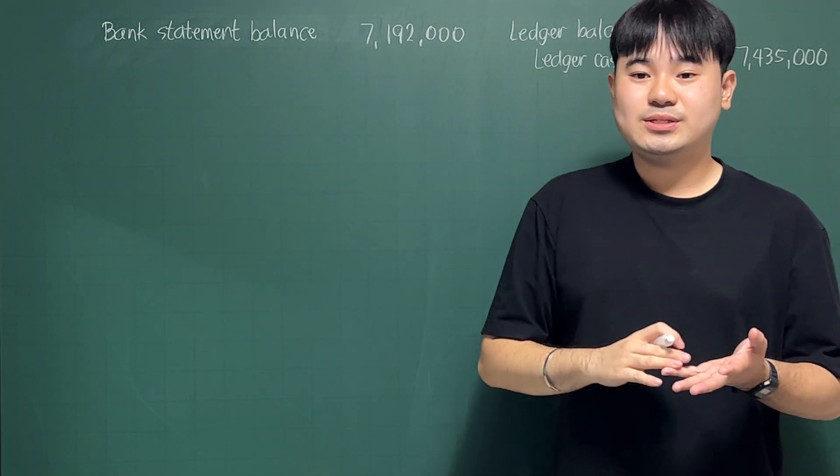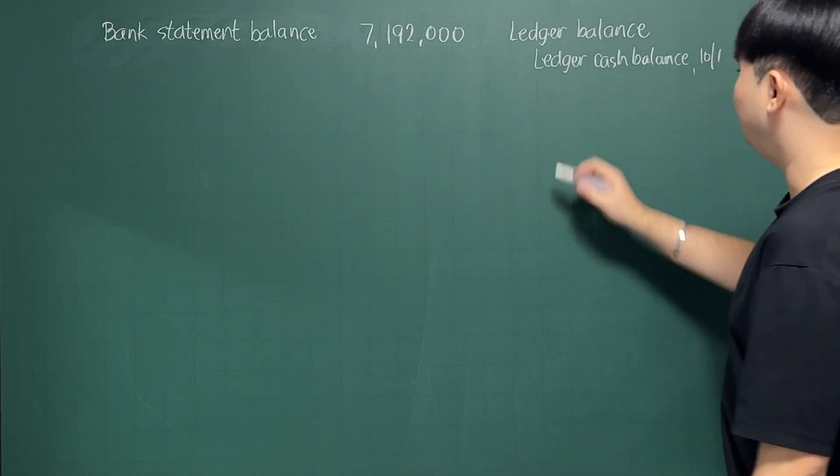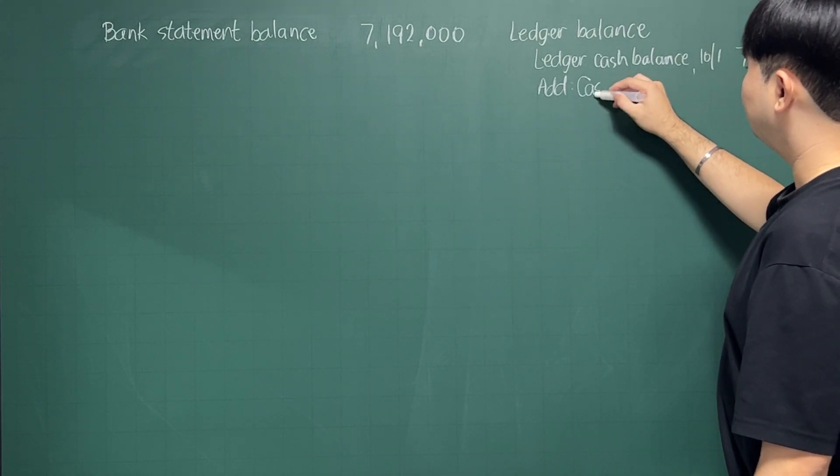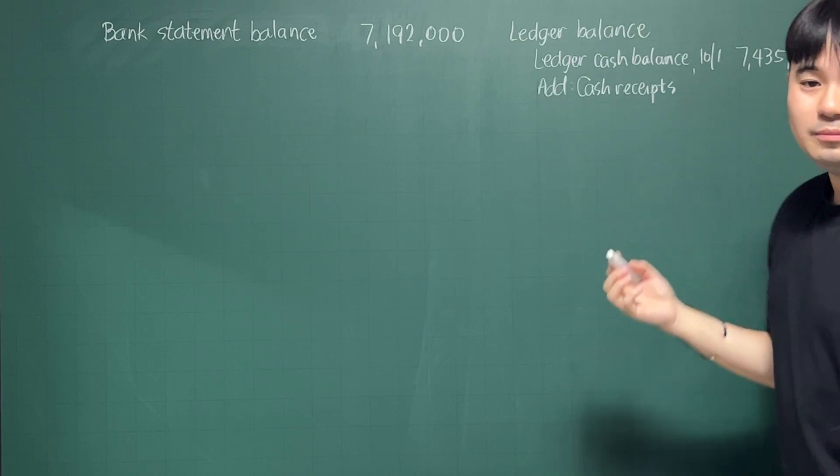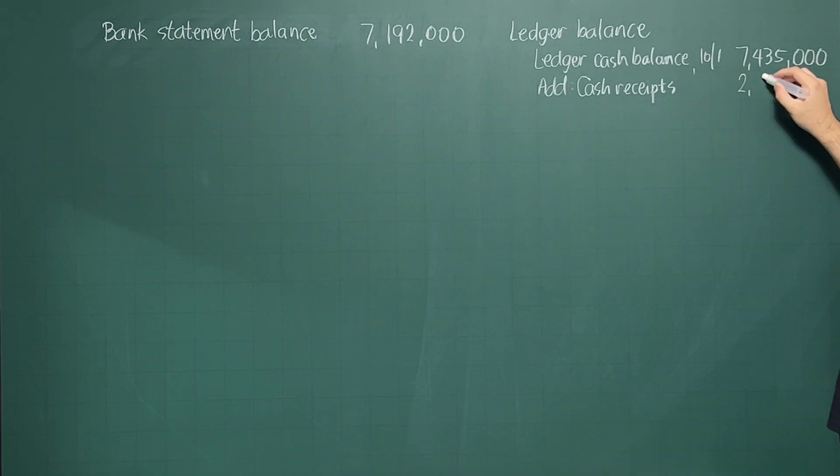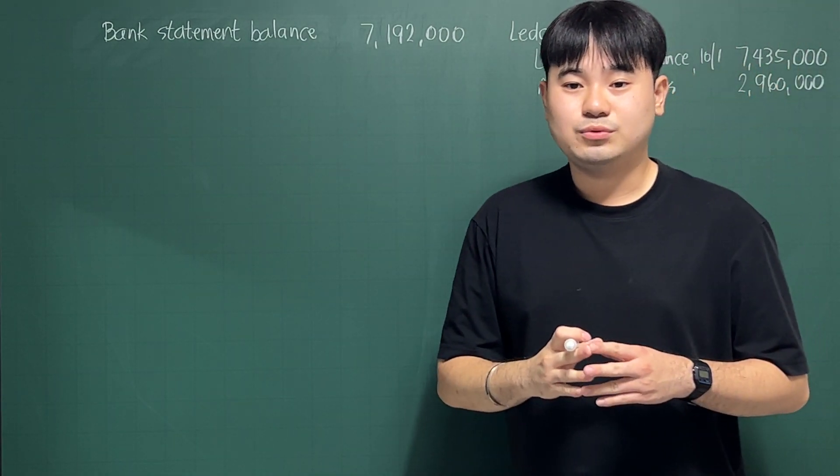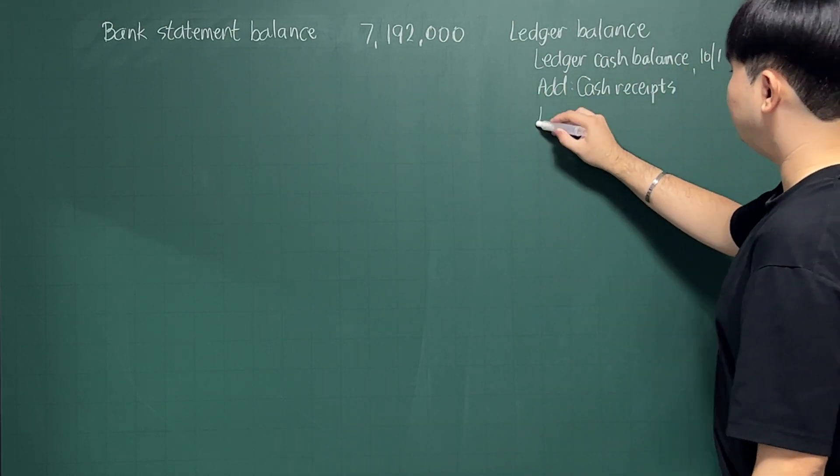Next, cash receipts during the month is $2,960,000. So we'll add it here. And cash disbursement amount to $2,745,000.